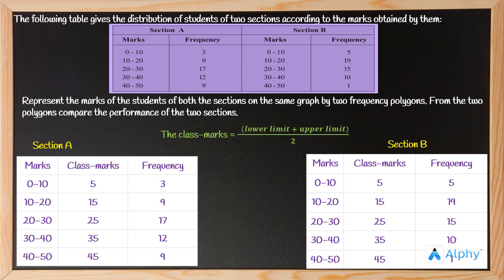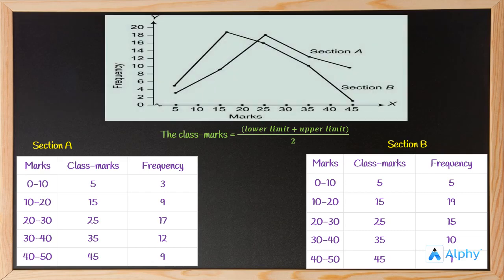We now construct the frequency polygon for each of these tables — for section A and section B. As you can see on the screen, we have created the frequency polygon for section A by plotting all the points according to the frequencies and class marks. Similarly for section B, we have marked all the points of class marks and frequencies.